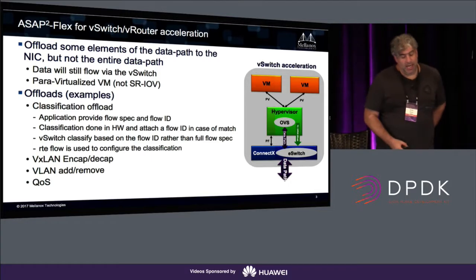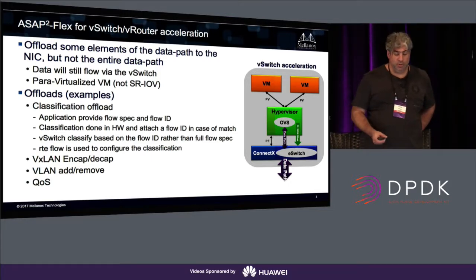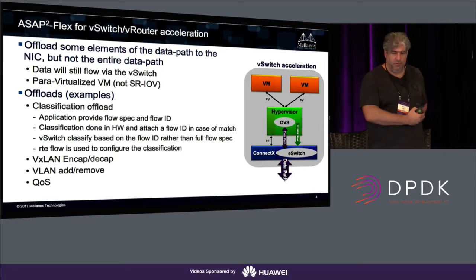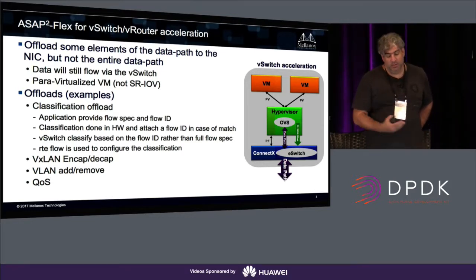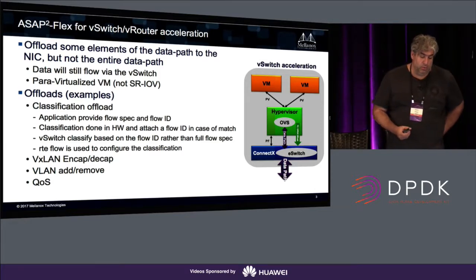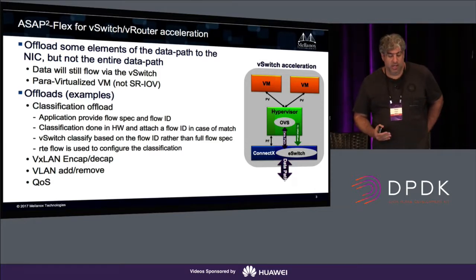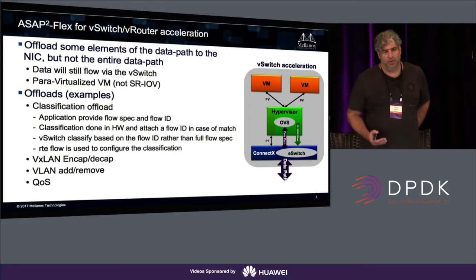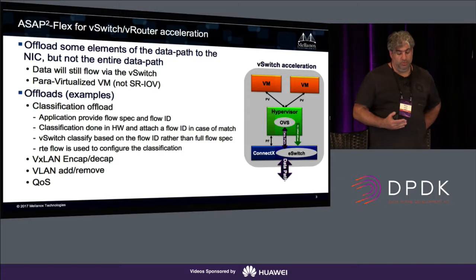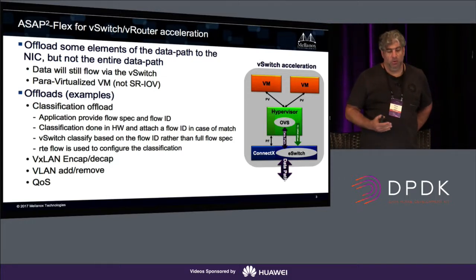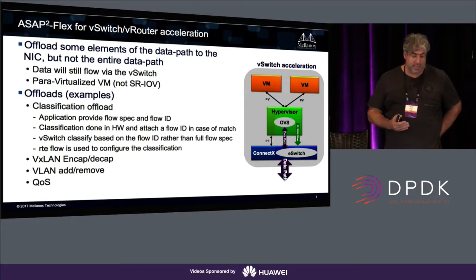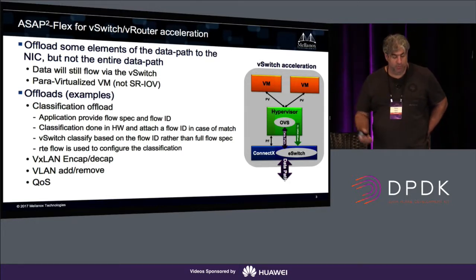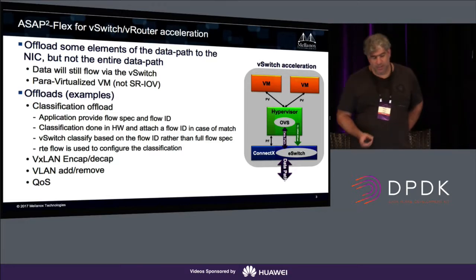We call ASAP² 'Accelerated Switch and Packet Processing.' We have two terms — one regarding SR-IOV, and 'flex' for when you don't use SR-IOV. The big difference when you don't use SR-IOV is that packets still go through the software. What we can do is offload the classification, offload the VXLAN encap/decap or VLAN push/pop, and do some quality of service.